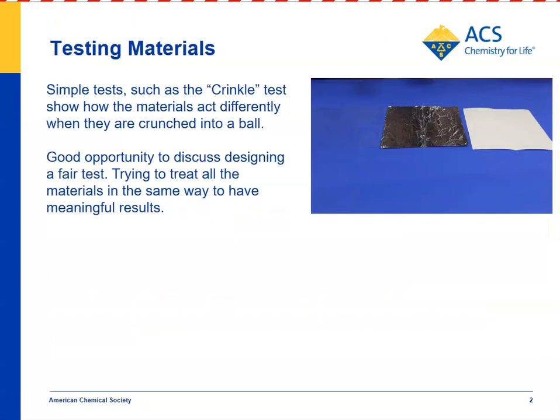Students will begin by looking at plastic, aluminum foil, and paper, and just describing how it looks and feels. You can demonstrate how to observe these substances by using a piece of felt as an example. You can say the felt feels soft, it's flexible, and when you hold it up to the light, you can't see through it. So students will do those same things with their plastic, aluminum foil, and paper.